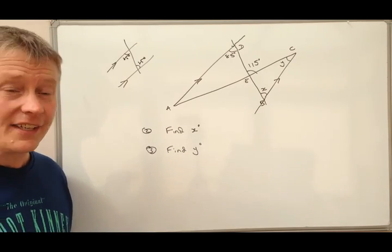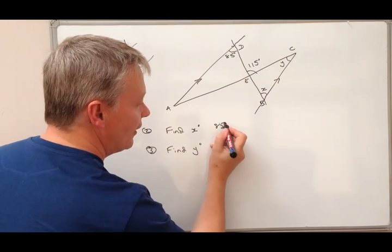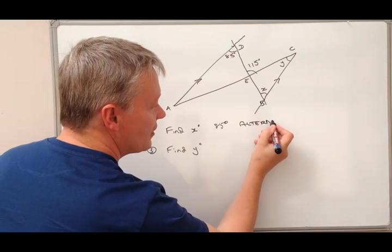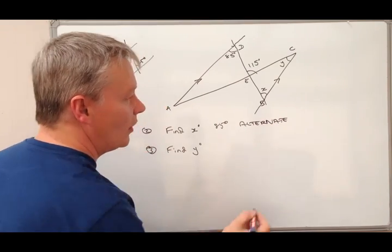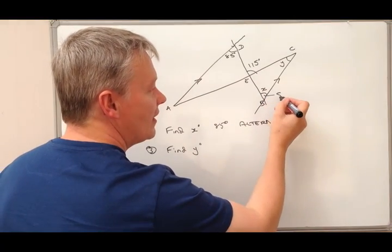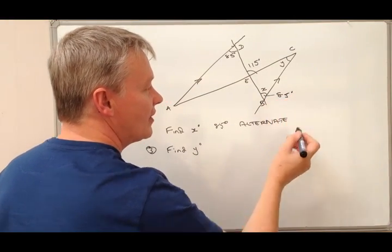So actually X is going to be 85 degrees because it's an alternate. So that's the answer to question one. So what we've worked out from there is that this value of X is 85 degrees.